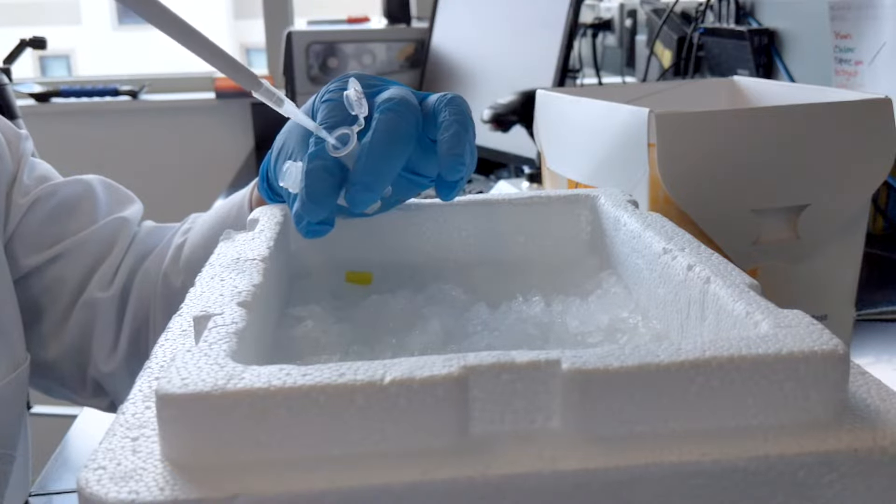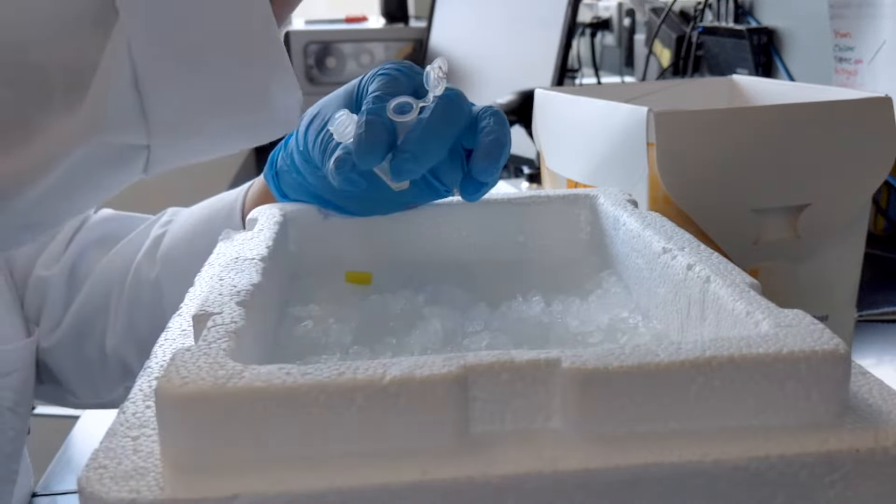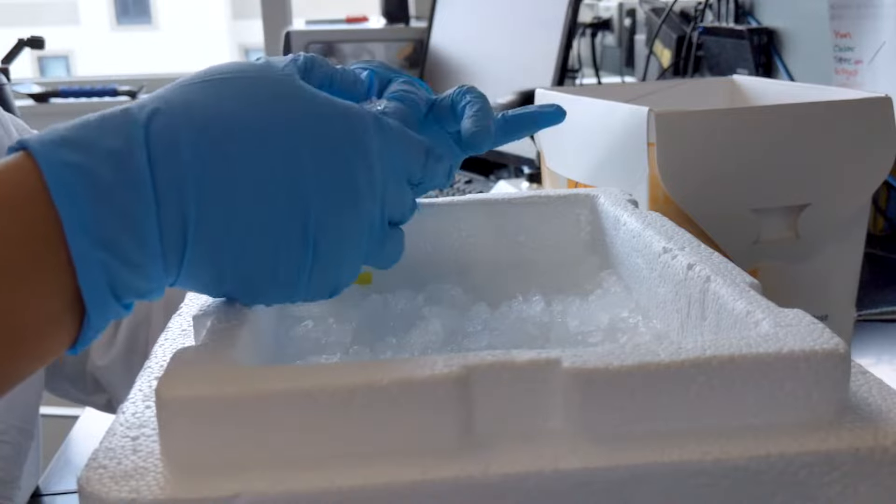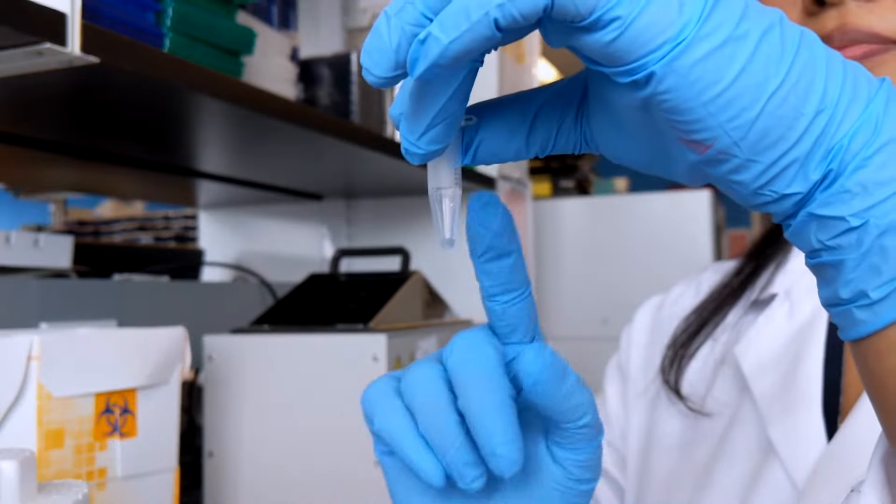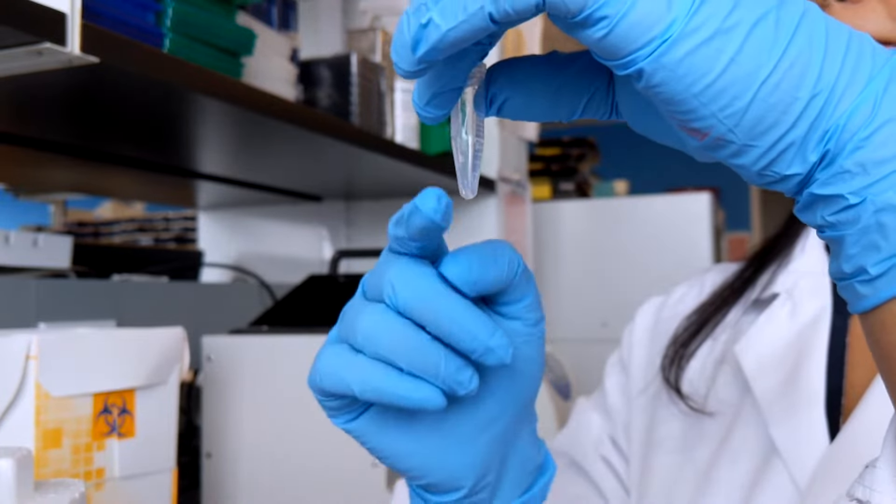Next, add the plasmid DNA to the competent cells. Add between 10 picograms to 100 nanograms of plasmid DNA to your cells. Mix the cells and DNA by gently flicking the tube with your finger.